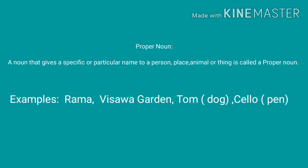Let us revise. Proper noun. A noun that gives a specific or particular name to a person, place, animal or thing is called a proper noun. For examples: Rama, Vishwa Garden, Tom, Cello, etc.